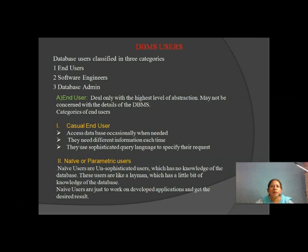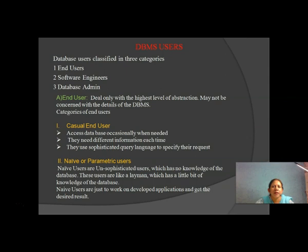Our third topic is DBMS Users — how many types of users use DBMS, what types they are, and what their work is. There are three types of users: end users, software engineers, and database administrator. End users basically deal only with the highest level of abstraction and may not be concerned with the details of the DBMS. End users are at the top level and have no knowledge of the database — they only solve their queries.